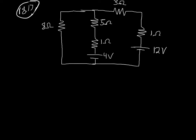We're doing an example of Kirchhoff's Laws, and in this example we want to solve for the current going through each one of the branches. In doing Kirchhoff's Laws, you want to apply two different laws — two different rules. The first rule is the junction rule.